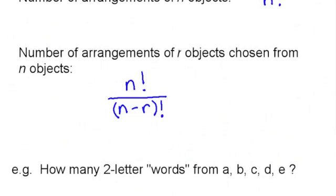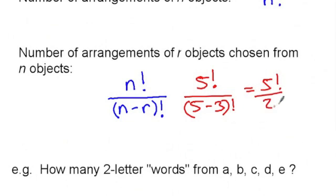So in the example that we just looked at, we were choosing three objects from a possible five, so that was five factorial over five take three factorial, or five factorial over two factorial.